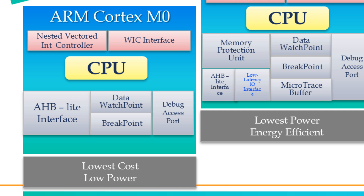The main NVIC features include a configurable number of external interrupts from 1 to 240, though the actual number depends on the chip manufacturer. It has a configurable number of priority bits from 3 to 8 bits. It also supports level and pulse interrupts, and dynamic re-prioritization of interrupts, as well as priority grouping.